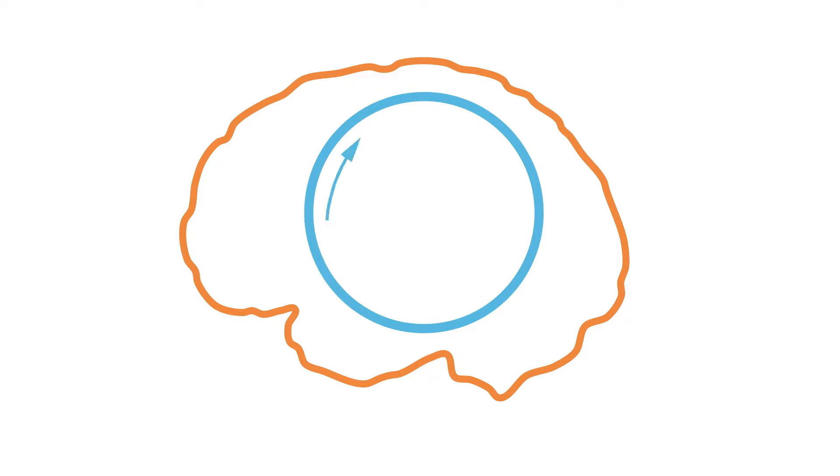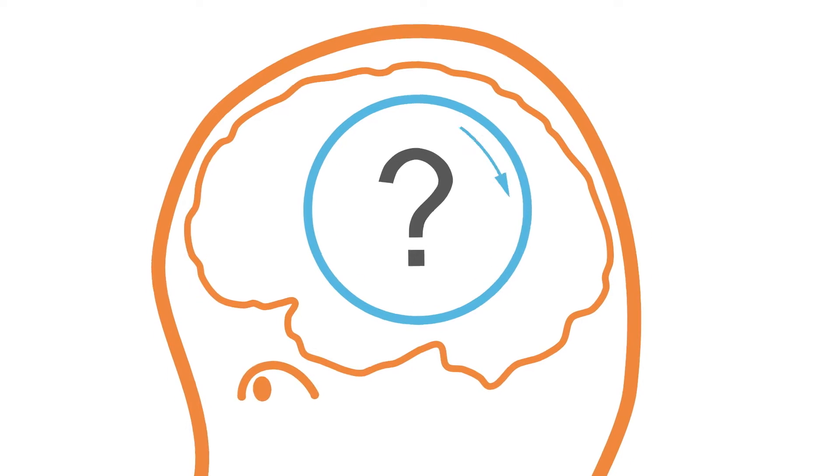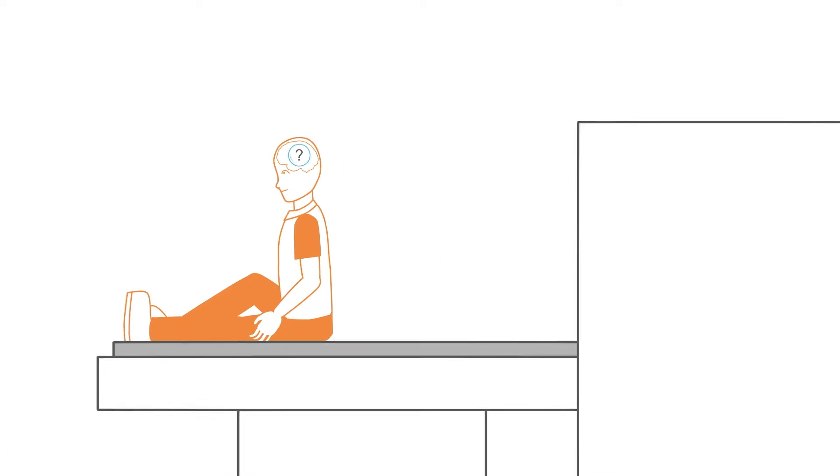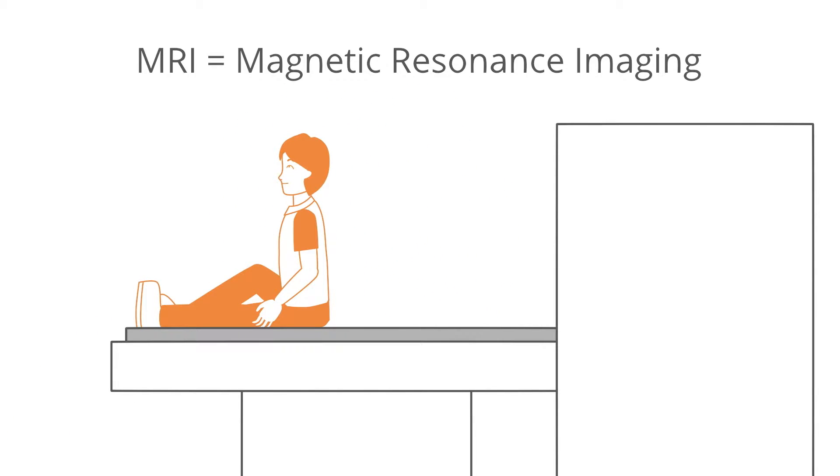What is going on in the brain as we are learning? In order to find out, you need an MRI. The acronym stands for Magnetic Resonance Imaging.